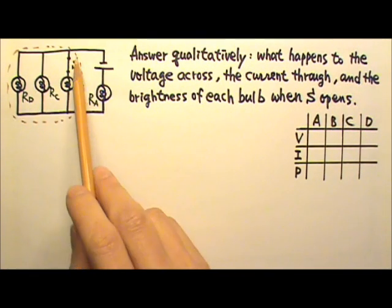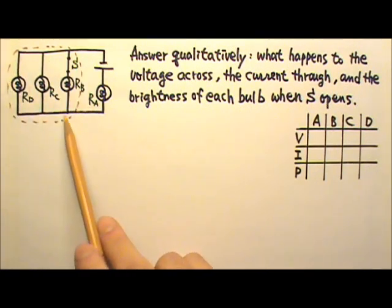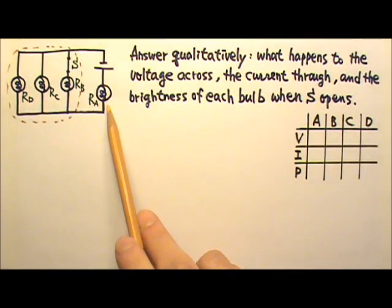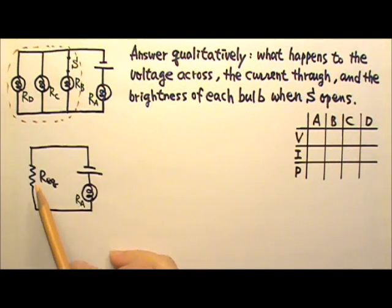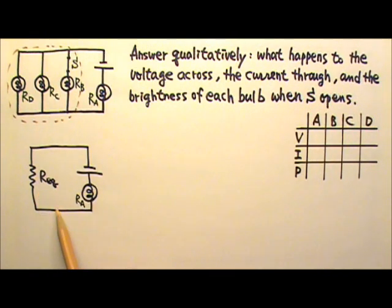In this circuit, these three light bulbs are in parallel, and then together they are in series with bulb A. If I use this equivalent resistance to represent the three bulbs in parallel, then this equivalent resistance is in series with bulb A, like this.